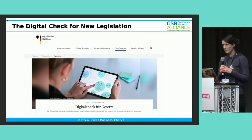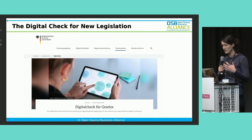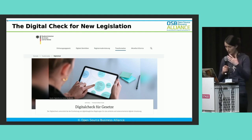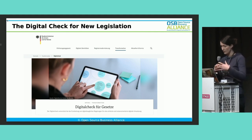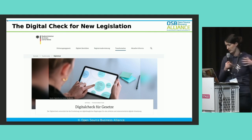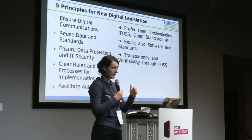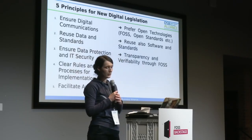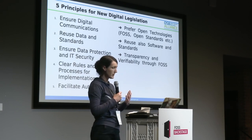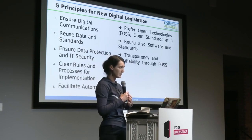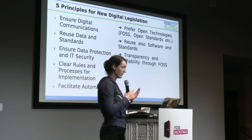Very often the problem being addressed here is that it's not enough to just write a law, have some legal wording, and then take the analog process and just put it into the digital sphere — very often that doesn't work. So the digital check for new legislation is essentially a checklist based on five principles that you see on the left.